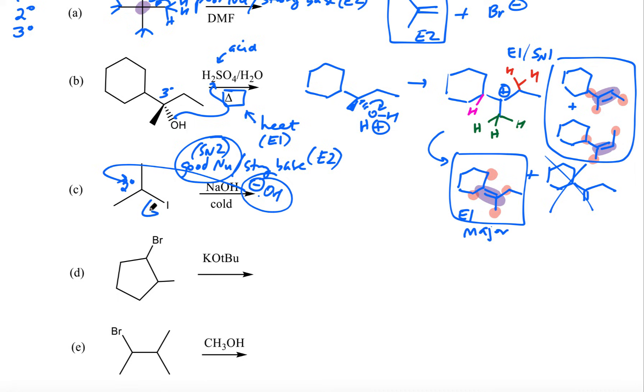So I'm going to pick SN2. OH is going to come in an opposite side attack. And I'm going to get this. And that's because it says cold. So I'm going to not put the elimination product. If I had not specified the temperature, I would have also had this elimination product E2.